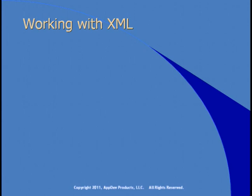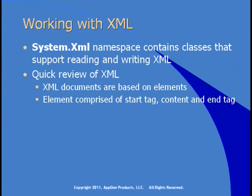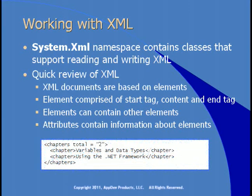Let's continue our look at the .NET Framework by seeing how you can use .NET Framework classes to work with XML. The System.Xml namespace contains a number of classes that you can use to read and write XML. As a quick background, XML documents are based on elements. An element is comprised of a start tag, content, and an end tag. Elements can contain other elements, and attributes contain information about elements. Here's a small piece of XML demonstrating this — the first line is a start tag for the chapters element, the final line is the closing end tag, and the chapters element has an attribute named total with a value of two, telling us there are two chapters. We then have two chapter elements with content and end tags.